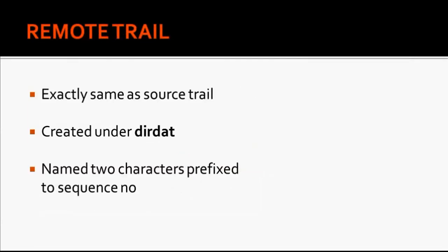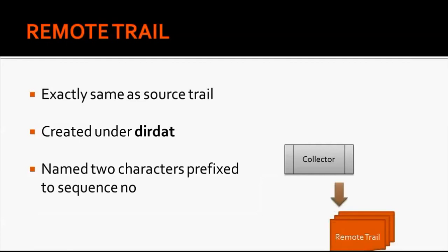The next Golden Gate component is the remote trail. The remote trail file is exactly the same as the source trail file, except that it is created on the remote server. The source and remote trail files are created under the default directory called dir data. The naming convention of remote trail files is two characters prefixed to the sequence number.